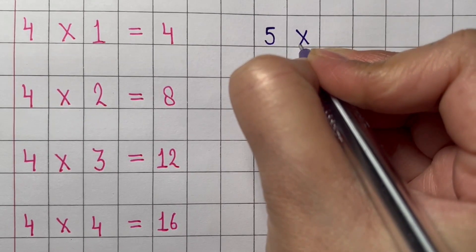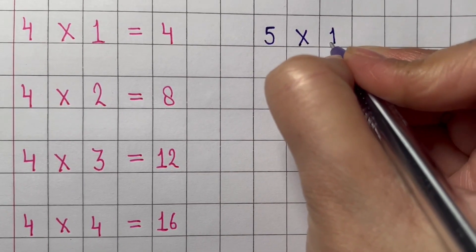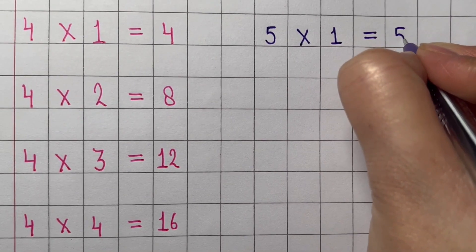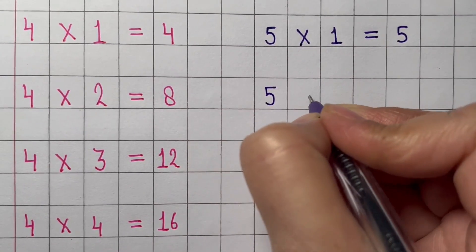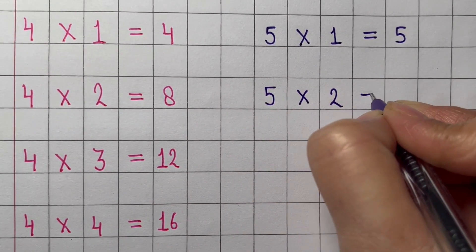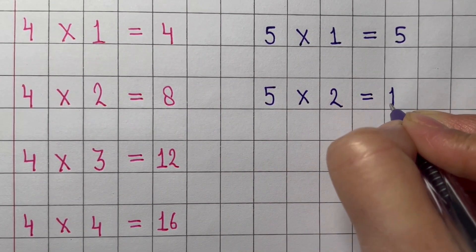The table of 5. One times 5 equals 5. Two times 5 equals 10.